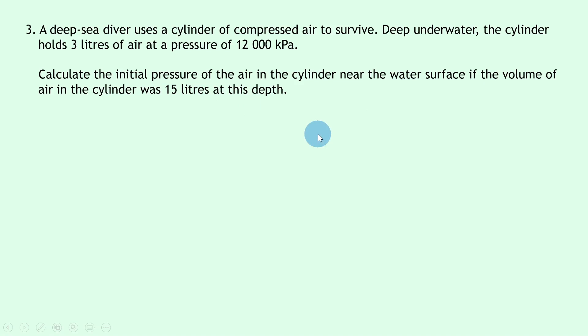So it makes sense to talk about the things near the water's surface as being the initial values before the deep sea diver has gone further underwater, which would be the final values. So in this case, we're trying to find P1, the initial pressure. We know the initial volume V1 is 15 liters. We know the final pressure P2 is 12,000 kilopascals. And lastly, the final volume V2 is 3 liters.